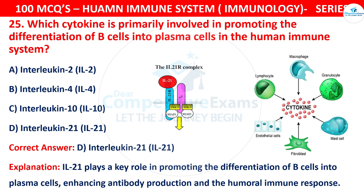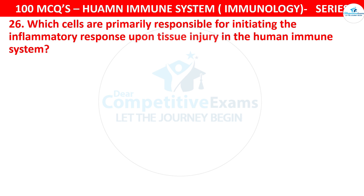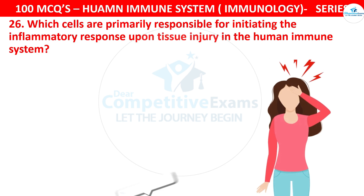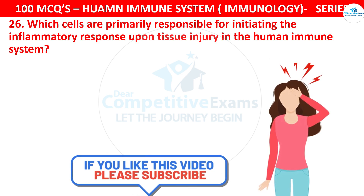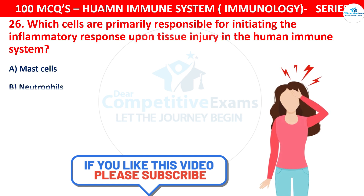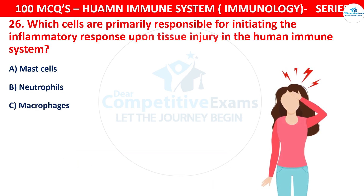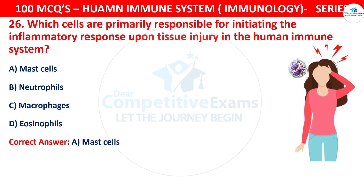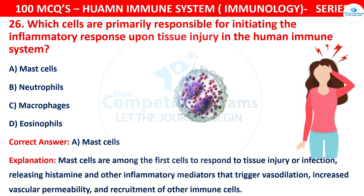Question 26: Which cells are primarily responsible for initiating the inflammatory response upon tissue injury in the human immune system? The options are Mast cells, Neutrophils, Macrophages, or Eosinophils. The correct answer is A, that is Mast cells. Mast cells are among the first cells to respond to tissue injury or infection, releasing histamine and other inflammatory mediators that trigger vasodilation, increased vascular permeability, and recruitment of other immune cells.